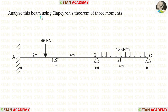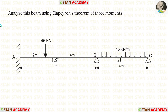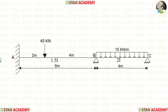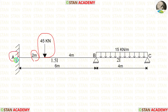Hello everyone. Today we are going to analyze a beam using Clapeyron's theorem of three moments. Before analyzing, let's see the beam. In this beam, there are two spans: span AB and span BC. In span AB, there is a point load of 45 kN acting at 2 m from point A.